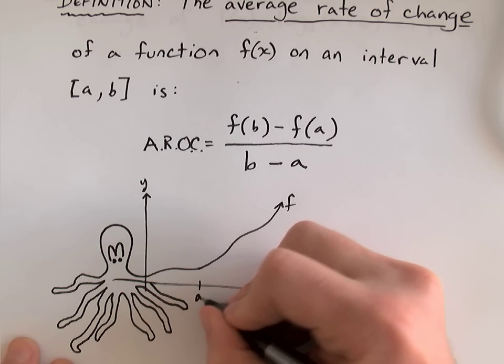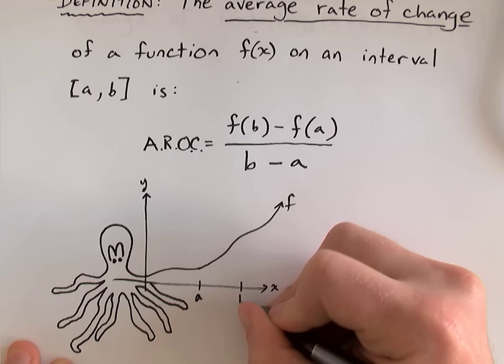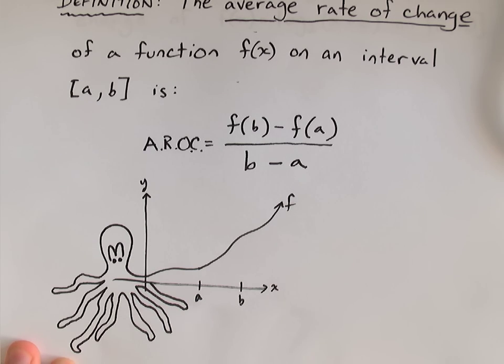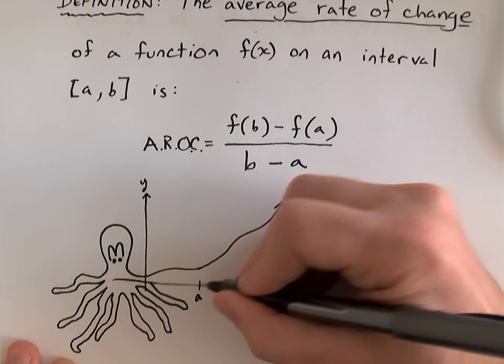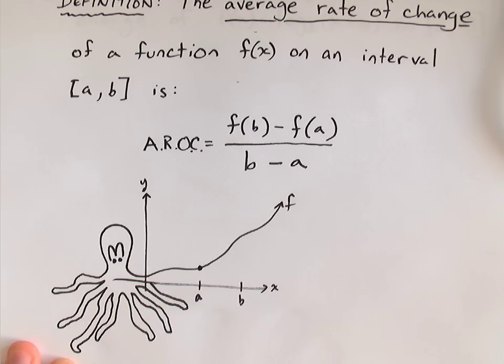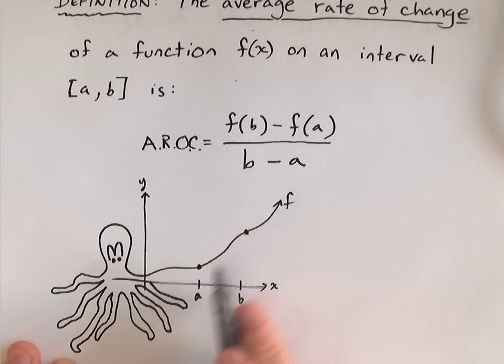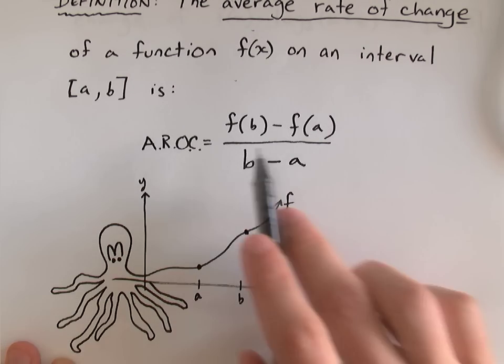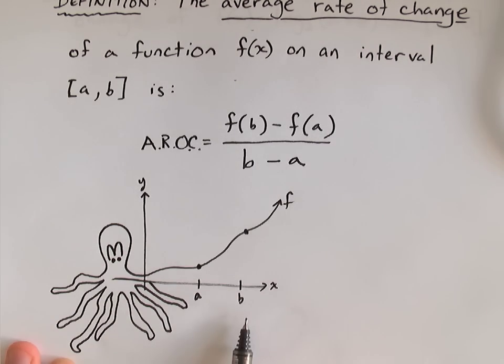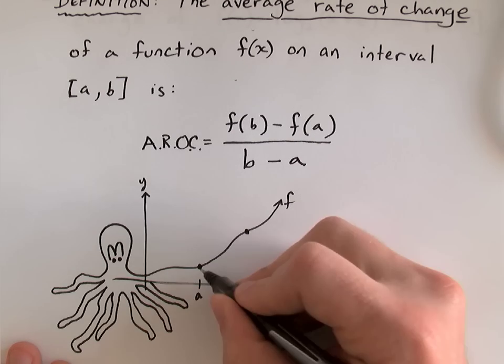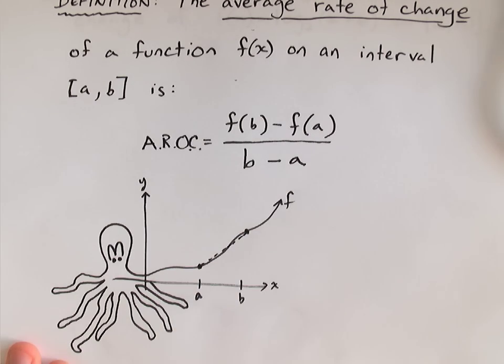Maybe we're interested in the average rate of change of that leg on the interval from a to b. Well, all we do is we find the y-coordinate at a, we find the y-coordinate at b, and those are f(b) and f(a) respectively. And we subtract the y-coordinates, f(b) minus f(a), and then we subtract the x-coordinates. Change in y over change in x, and that gives us the average rate of change on that interval.